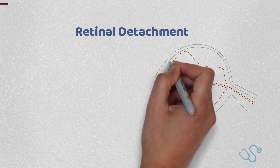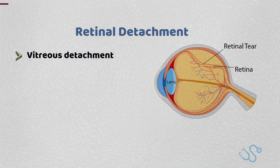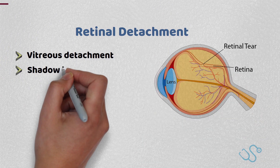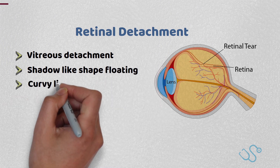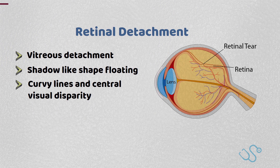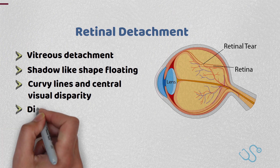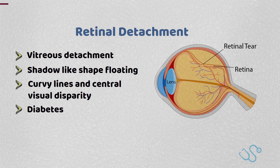Retinal detachments are often predisposed by vitreous hemorrhages, where patients often complain of a shadow-like shape floating towards the centre of their vision, with a sensation of curved lines and central vision disparity. Patients also have floaters and dark spots at onset. Other causes include diabetes, where scar tissue pulls away the retina from the back of the eye, or when there's excessive exudate from underneath the retina due to inflammation, commonly seen in trauma or inflammatory disorders.